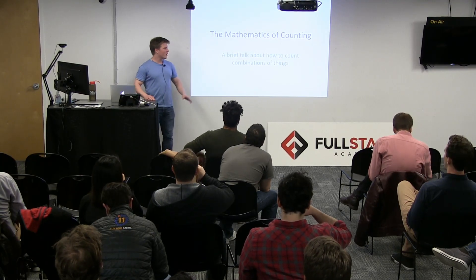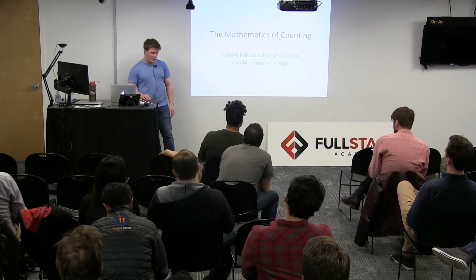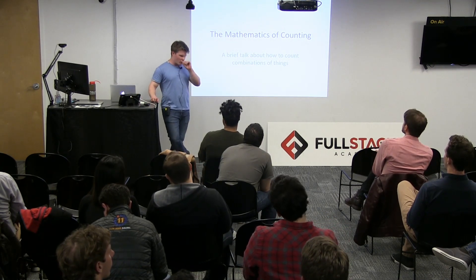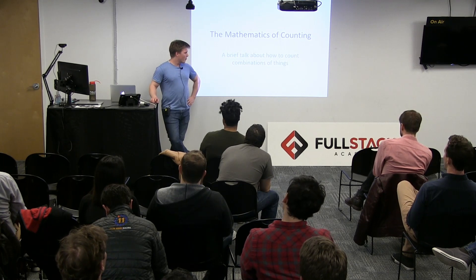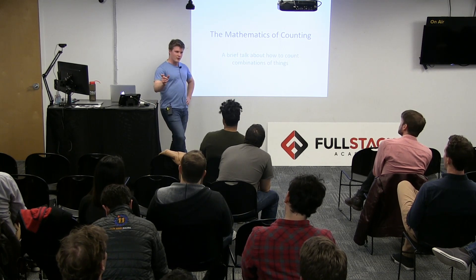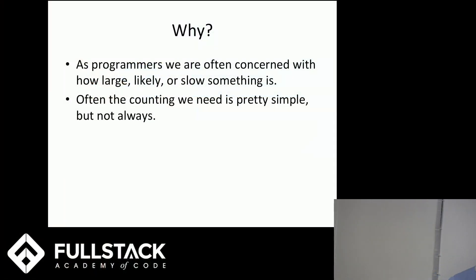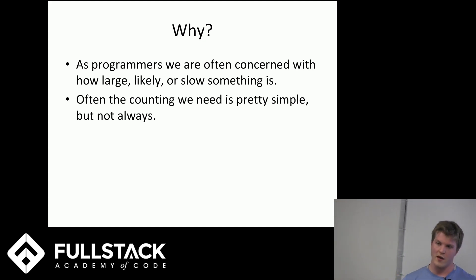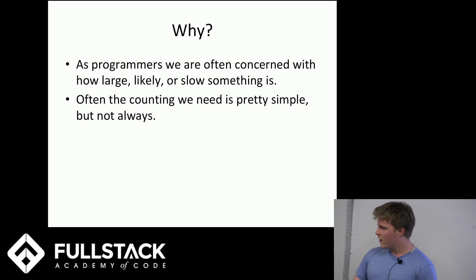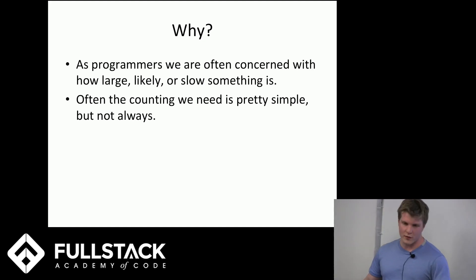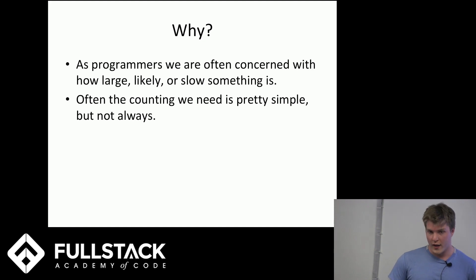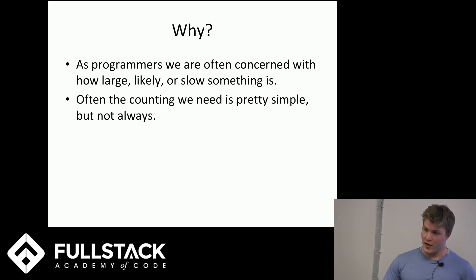I'm going to talk about the mathematics of counting combinations of things. I've been working on a project for about a year that uses this kind of logic as its fundamental value prop. But also because programmers are often concerned with how large, likely, or slow things are, and counting combinations of things is an integral means of estimating these kinds of things.